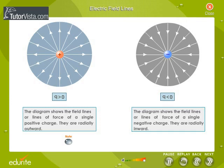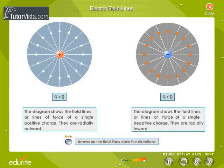In the case of a single negative charge, the lines of force are radially inward. Arrows on the field lines show the directions.